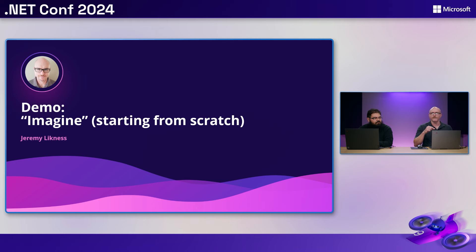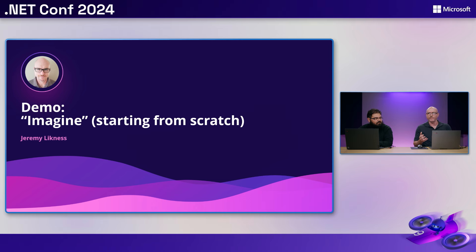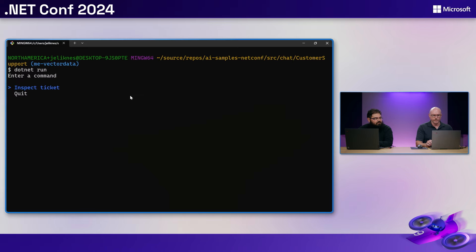This talk is about starting from scratch. I want to take us to an imaginary scenario where you're working in a shop that has no AI at all, no intelligent apps right now. What do we do and how do we start building as .NET developers making those apps more intelligent? I'm going to jump to a small application I've written for a support agent — imagine a call coming in and needing to find out what's going on with a customer.